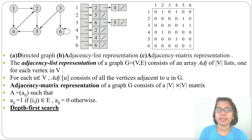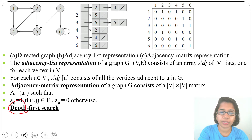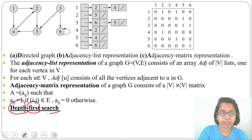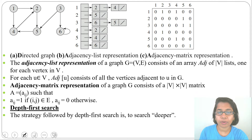In the previous lecture I discussed adjacency matrix representation and adjacency list representation. In today's lecture I will discuss depth first search. First, understand what is the meaning of depth first search: depth means go deeper, first means which comes earlier, and search means we are searching some element. In depth first search, after one we visit four, after four we visit two, after two we visit five — so we are going deeper in a sequence.